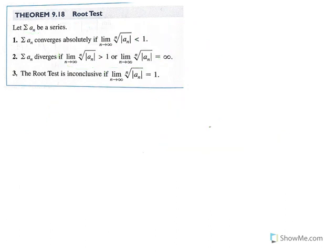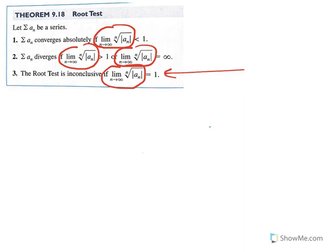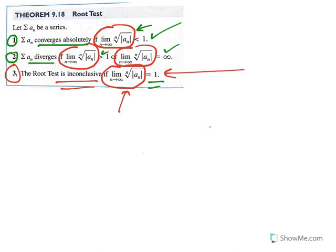Like the ratio test, you're always taking the same limit for the root test, but depending on what that limit equals, you reach different conclusions. If the limit is less than 1, the root test tells you the series converges absolutely. If the limit is greater than 1 or infinity, the series diverges. If the limit equals 1, no conclusion can be drawn — the series could converge or diverge, and the root test is inconclusive.